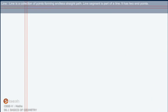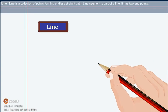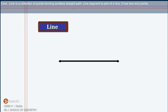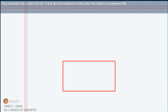Line: Line is a collection of points forming endless straight path. Line segment is part of a line. It has two endpoints. This rectangle has a side of 8 cm. A and B are the endpoints of this side. We called it as segment AB.